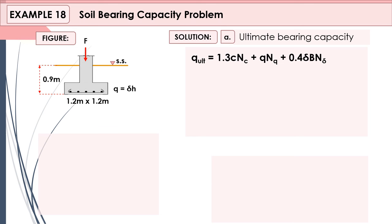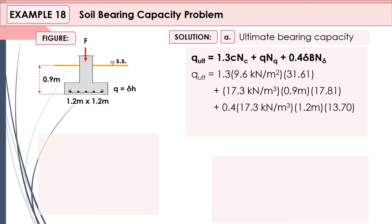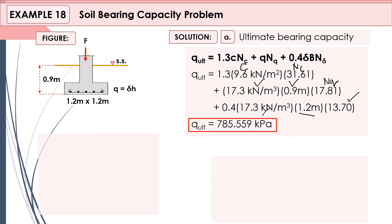Since this is a square footing, we use the formula: qu = 1.3cNc + qNq + 0.4γBNγ. Substituting: 1.3 × 9.6 × Nc + (17.3 × 0.9) × Nq + 0.4 × 17.3 × 1.2 × Nγ, where Nγ = 13.70 as given. The ultimate bearing capacity is equal to 785.559 kPa.